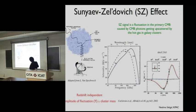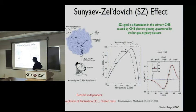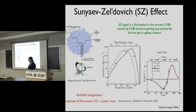We're talking about the SZ effect. Here's an incoming CMB photon that hits the hot gas; the photon energy gets upscattered. Here's the blackbody spectrum and the shift: below the null you see the decrement, above it you see the increment. This is cluster A2163. It's a unique spectral signature in the microwave background — nothing else looks like this. It's redshift-independent, and to first order its amplitude is proportional to the cluster mass. We denote the SZ flux as the Y parameter.